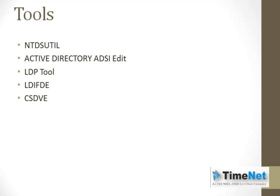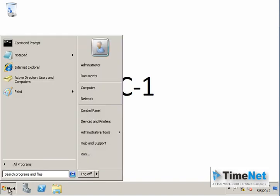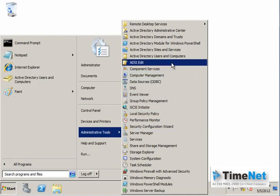Now we can have a look at how we can create these snapshots, how we can mount them, and how we can see the properties of users that existed when we created the snapshots. I am now logged on to a Windows Server 2008 domain controller with Active Directory installed and some users created, so we can have a look at them.